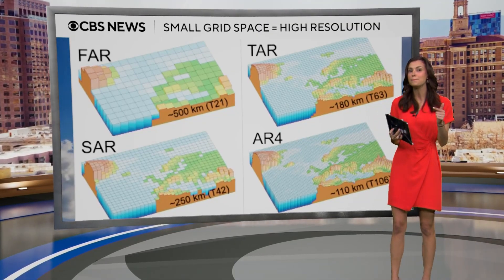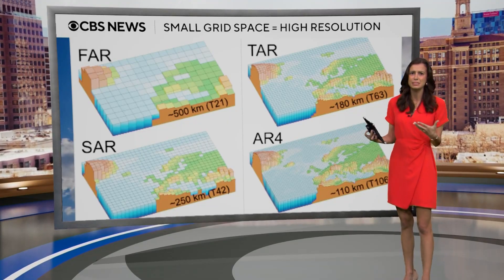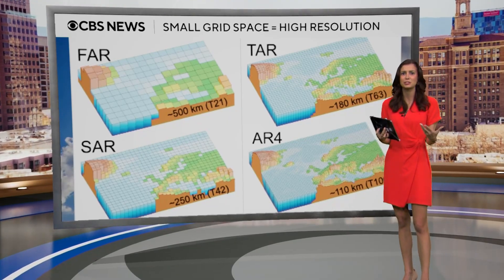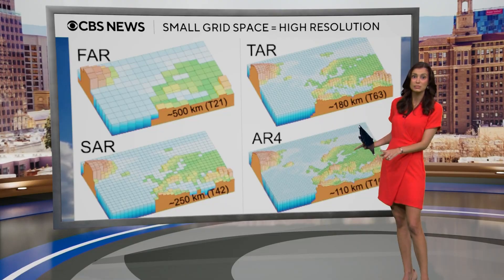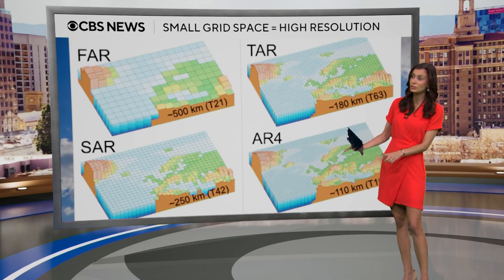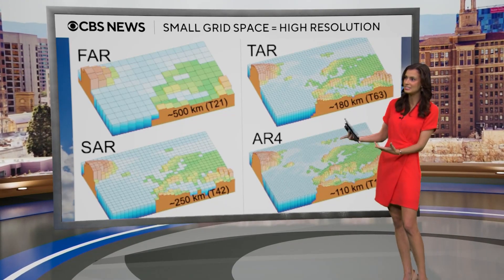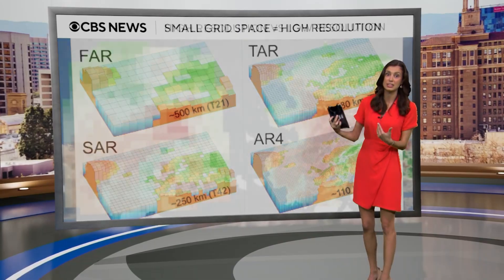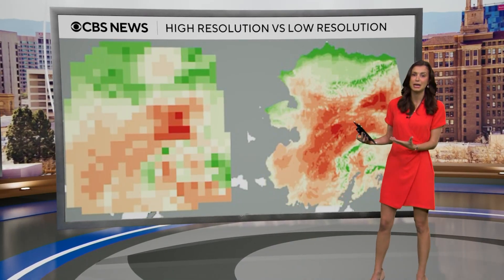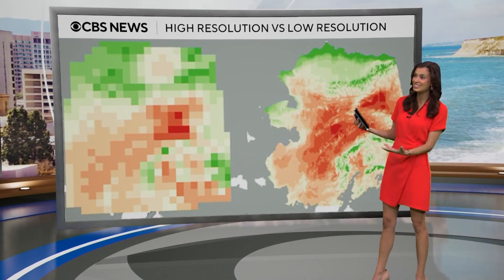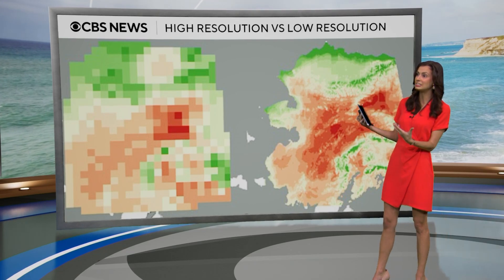Higher resolution in a model can show more detail with weather processes that may have been missed or poorly sampled. As you can see here, a lot smaller grid boxes show a lot more detail — showing where the mountainous terrain is compared to grid boxes that are a lot larger. When it comes to temperature all across Alaska, smaller grid boxes show you a lot more detail.